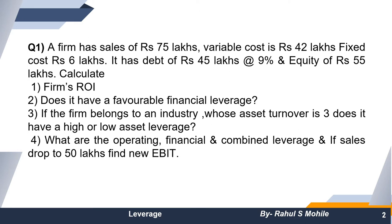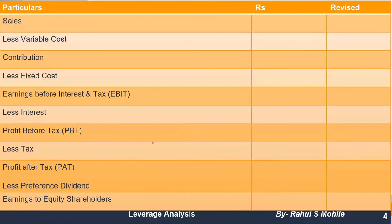Let me explain the format we will use. From sales minus variable cost, we get contribution. Contribution minus fixed cost gives us EBIT — earnings before interest and tax. From EBIT, if we deduct interest, we get profit before tax (PBT). From PBT, after deducting tax, we get profit after tax. After deducting preference dividend, we get earnings available to equity shareholders.